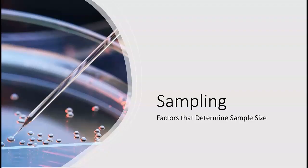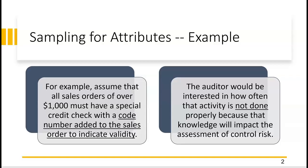In this video we're going to look at the factors that determine sample size on the exam. The key question is not the exact number of the sample, but when must the sample size increase and when can the auditor get away with a smaller sample size. We're going to use sampling for attributes, which means we're going to test controls. For example, assume there's a control in the client company's revenue cycle that all sales orders over a thousand dollars must have a special credit check performed.